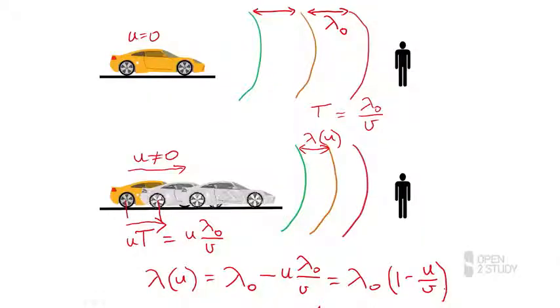We can do exactly the same thing if the car was moving away from us — except the waves would now get further apart by that same distance, giving a longer wavelength.